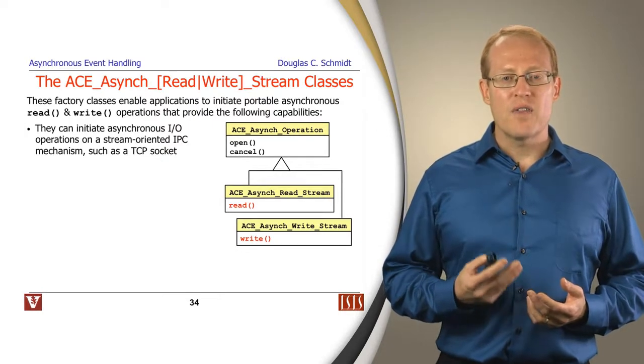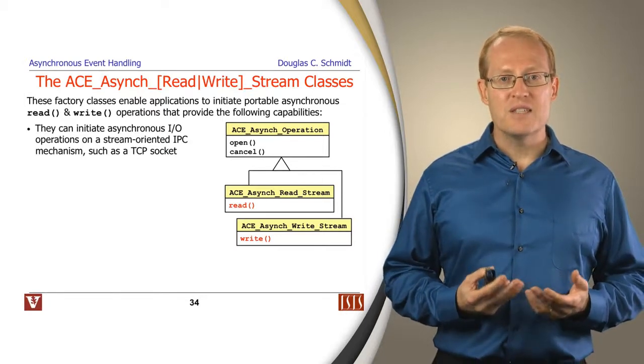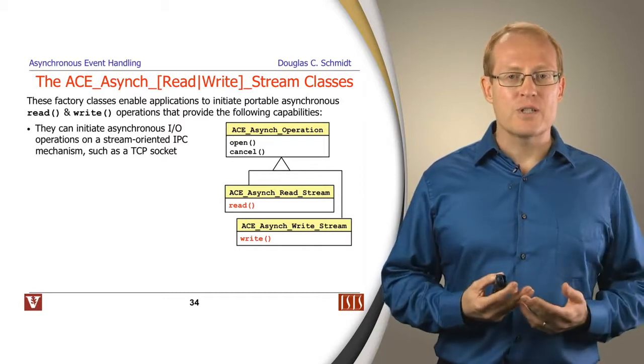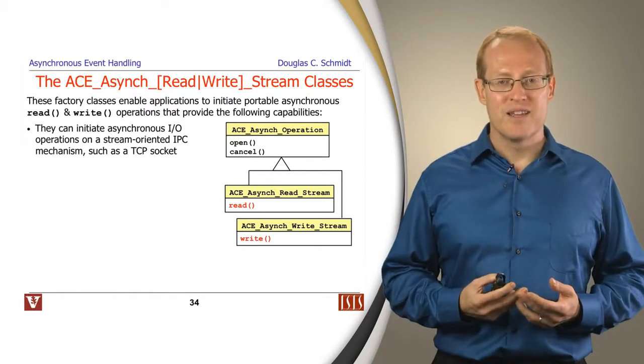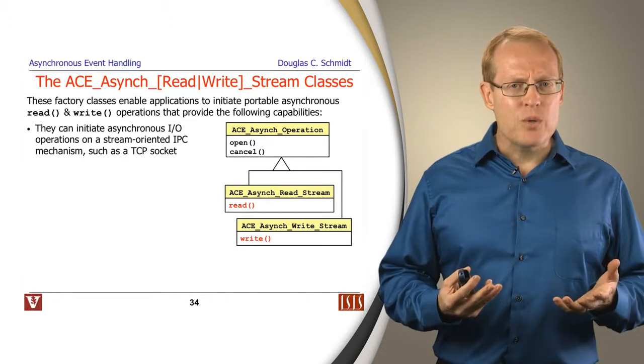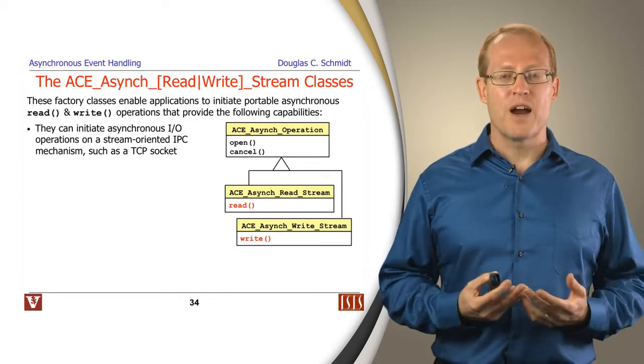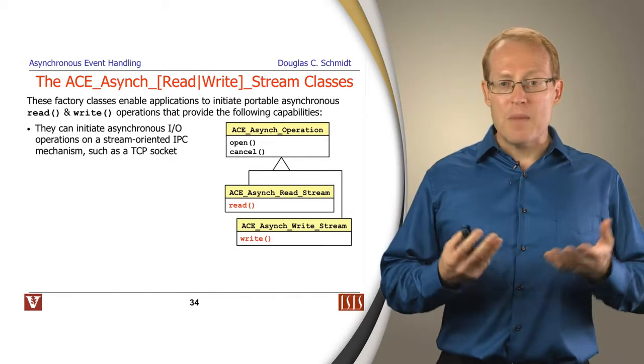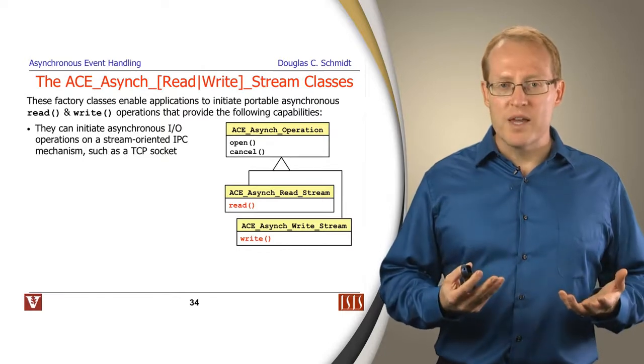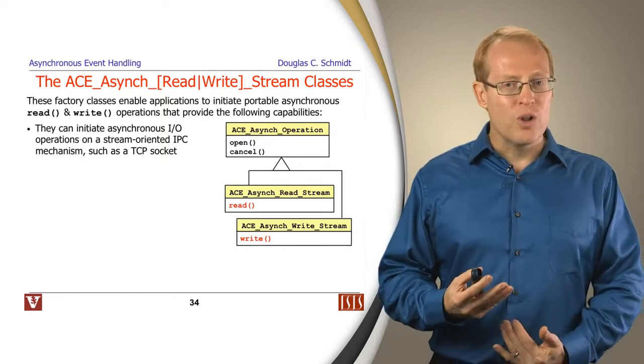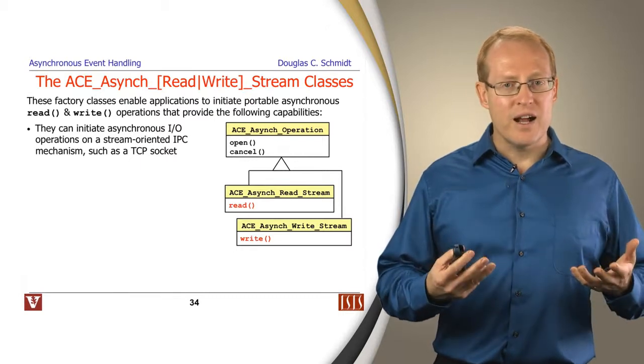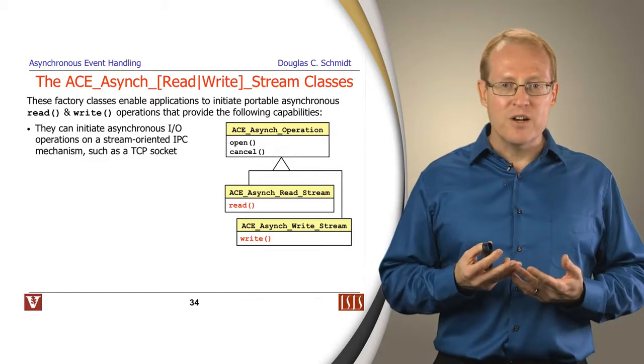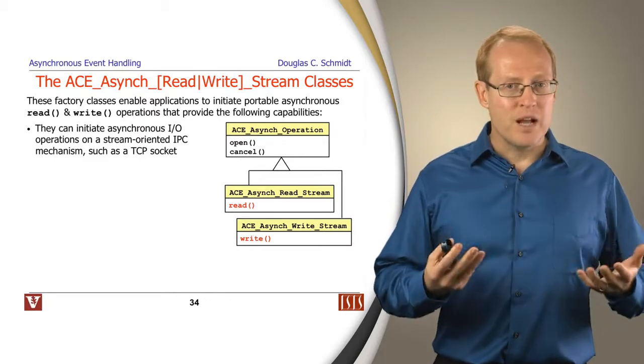The first set of classes are the ACE Async ReadStream and ACE Async WriteStream classes. These classes are used to initiate asynchronous operations to read and write data. If you think about how you would do this in a classic synchronous multi-threaded environment, you can invoke a call like send or receive that may block. There's no problem with this because you've got a separate thread of control and a separate runtime stack to keep track of state. When control comes back to that function, you can pick up from where you left off.